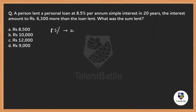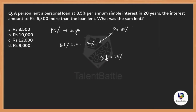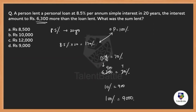Shortcut method: 8.5% per year over 20 years gives total interest of 8.5 × 20 = 170%. The principal is always 100%, so the difference is 170% − 100% = 70%. This 70% extra is ₹6300. So 70% = 6300, meaning 10% = 900, and therefore 100% (the principal) = ₹9000. This is a much faster technique — the answer is ₹9000.